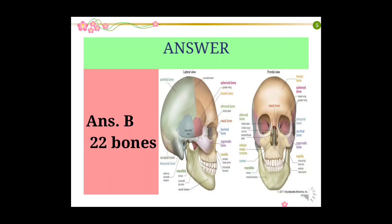Answer: 22 bones. The human skull is generally considered to consist of 22 bones, that is 8 cranial bones and 14 facial bones.